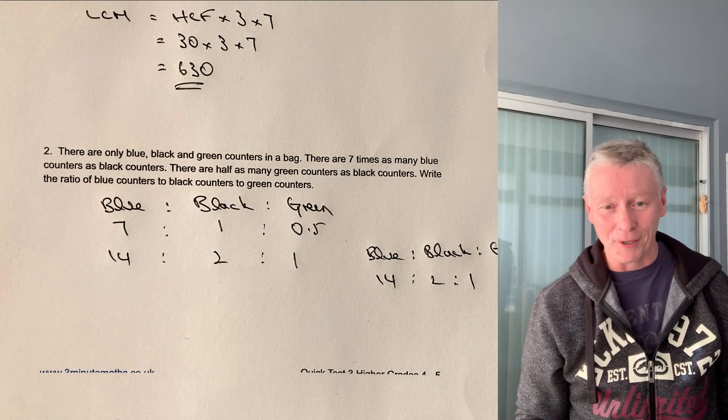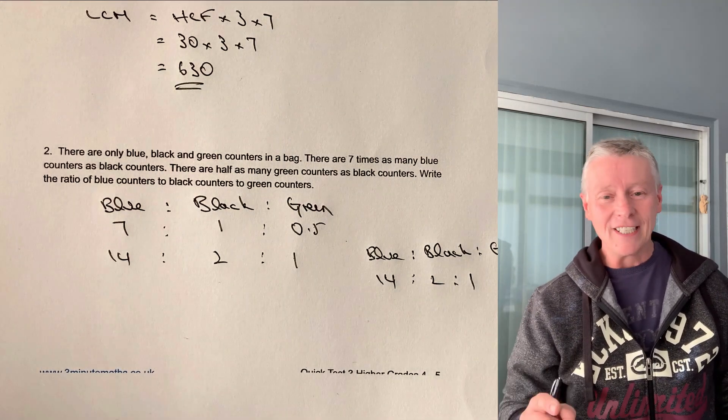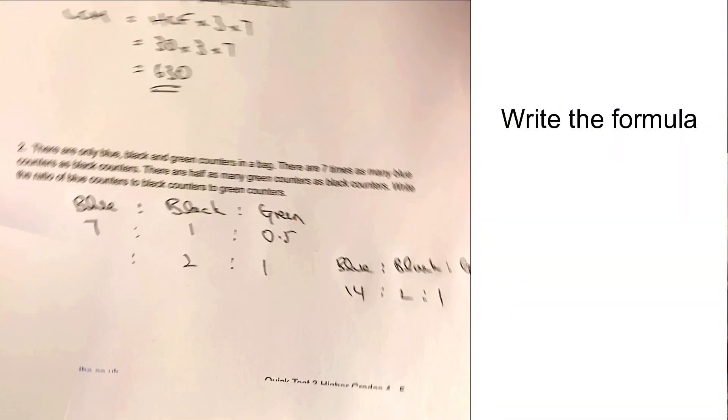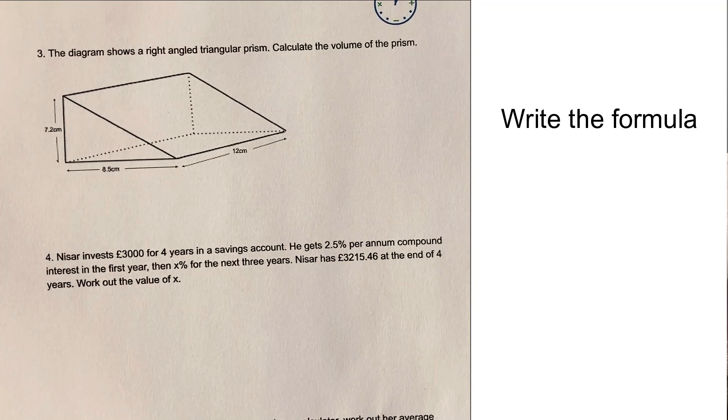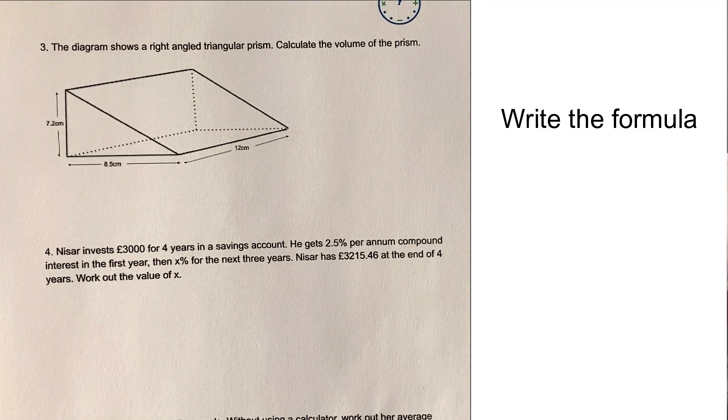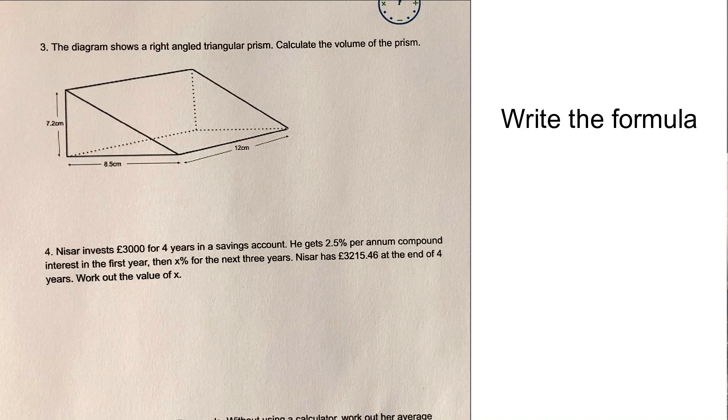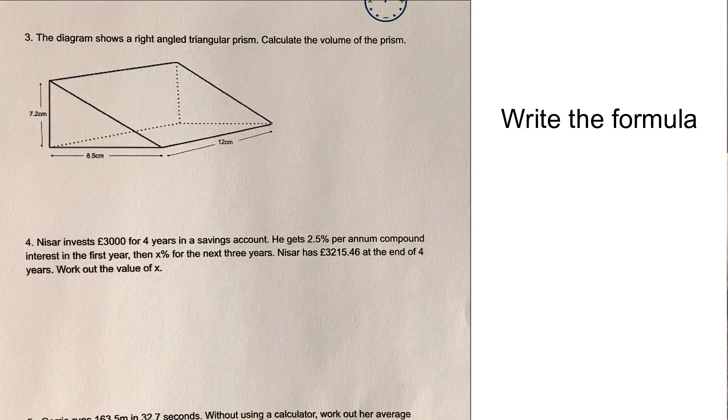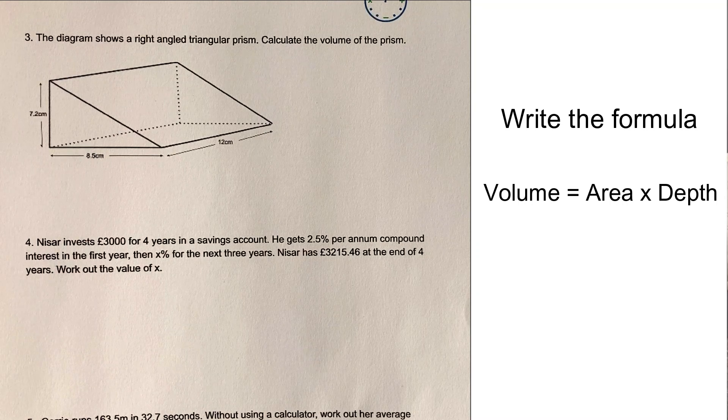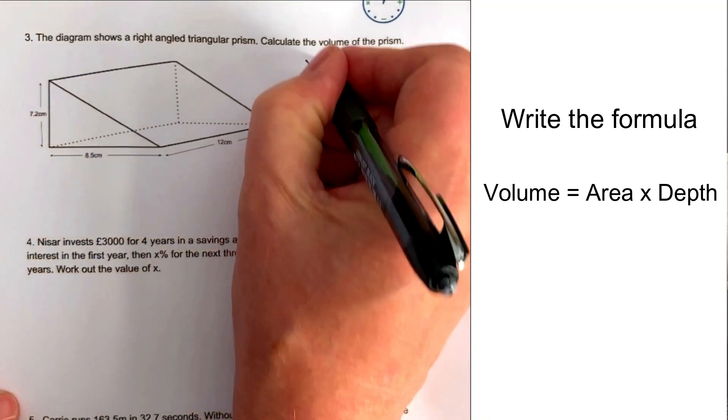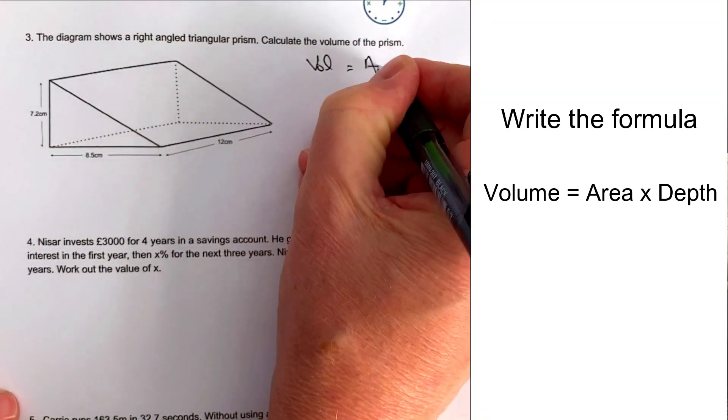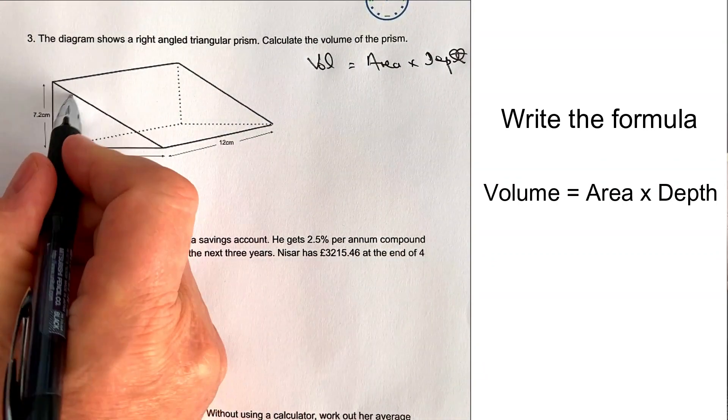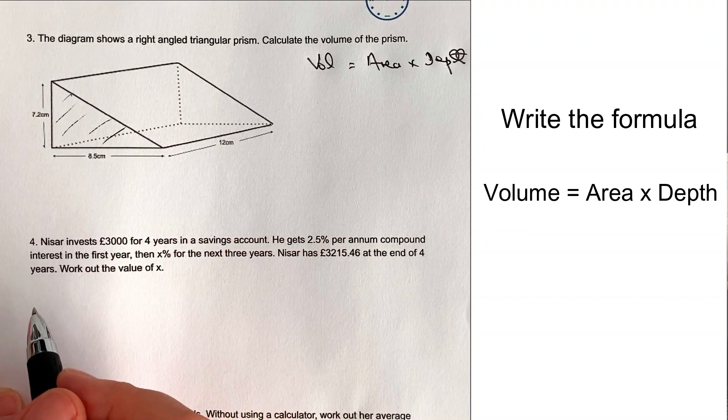Let's move on then to question number three. Please do stop the video. Have a go at the question. Compare your answer. So question number three is going to be all about working out the volume of a triangular prism. And again, fairly common type of question. Really, it's just a case of working out volume, which is going to be area times depth. So volume equals area times depth. So what we do, first of all, is work out the area of this triangle.